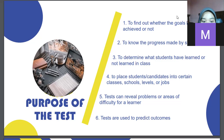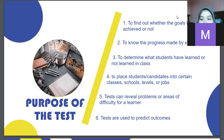The assumption here is that an individual who performs creditably at one level can be moved to another level after testing. Fifth, tests can reveal problems or areas of difficulty for a learner. A test may reveal whether or not a learner has a problem with, for example, pronouncing a sound, solving a problem involving decimals, or constructing a basic shape such as a triangle.